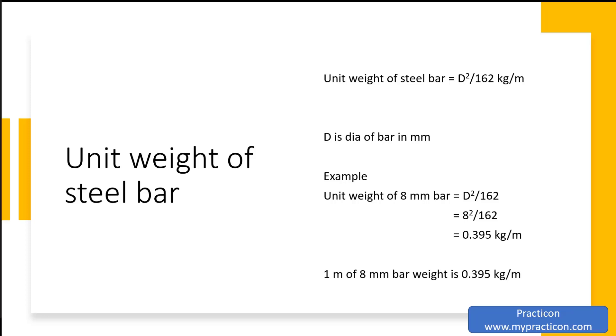Example: unit weight of 8 mm bar equals D squared by 162, which equals 8 squared by 162, equals 0.395 kg per meter. So 1 meter of 8 mm bar weighs 0.395 kg per meter.